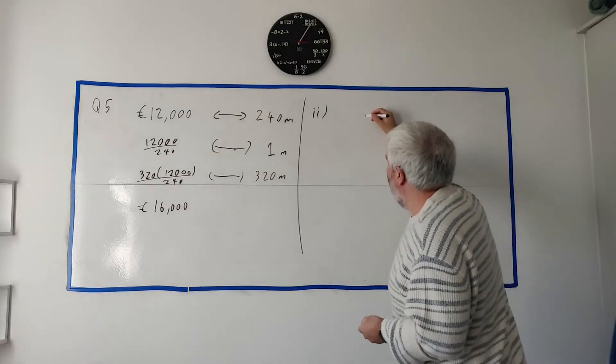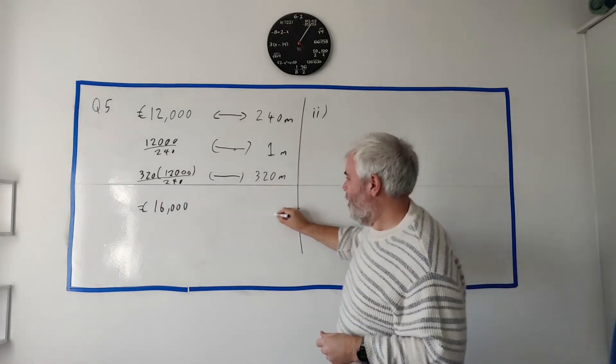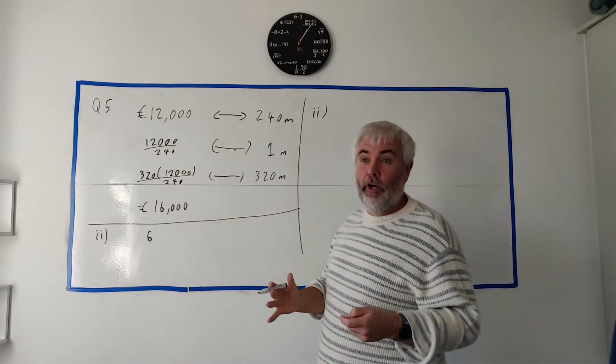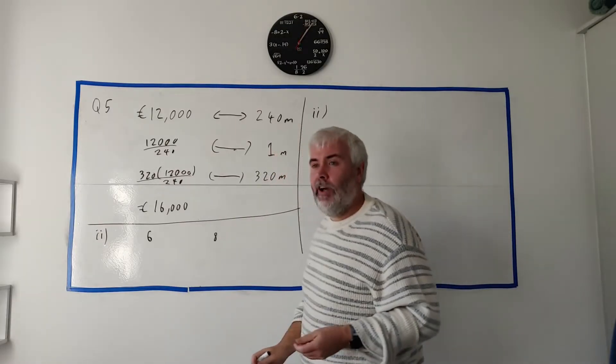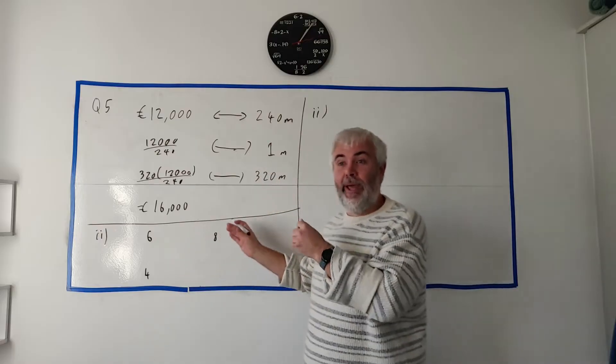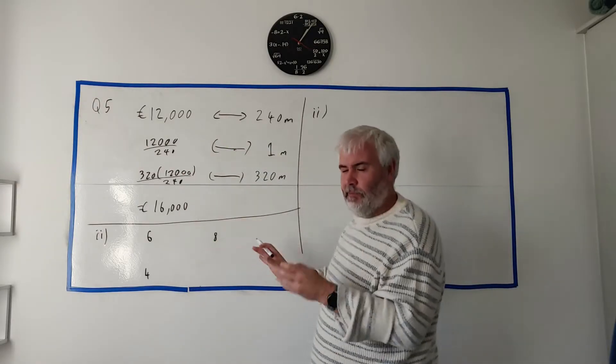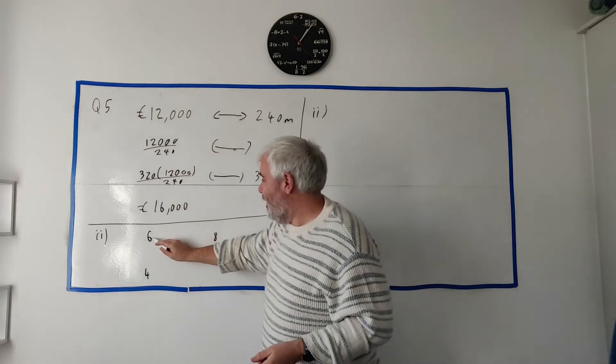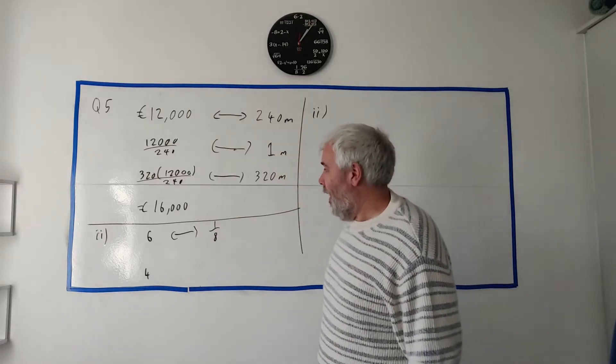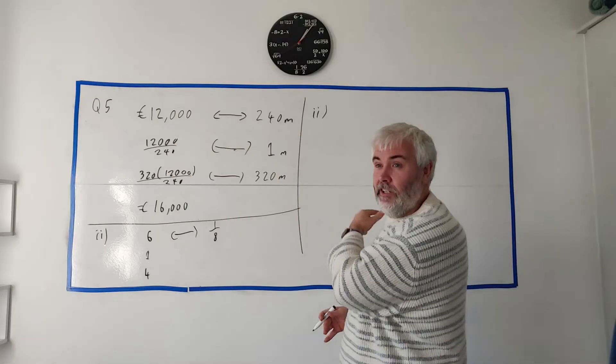Okay, on to part two. Part two is a weird one. It tells you it has six people working and it takes them eight days to do something. How long would it take four people? You might try and do it the normal way but the answer would go the wrong way because it's not a direct relationship. It's inversely related. Six goes to one over eight. And we're changing six to four.